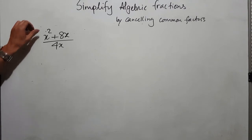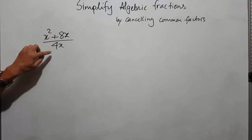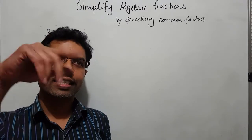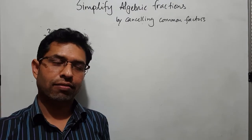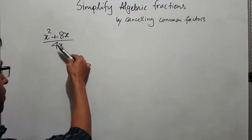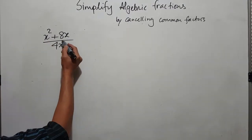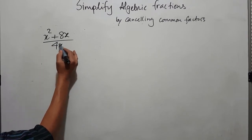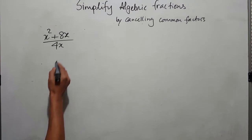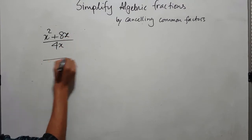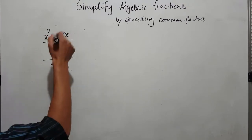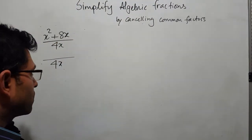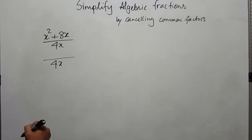Let's start with an example: x squared plus 8x over 4x. When cancelling a common factor, you can only cancel if the terms are in a division relation. Many students make the mistake of cancelling directly, but you have to understand that 4x is shared for both terms in the numerator. Instead of cancelling like that, we need to create the division relation first — only then can we cancel, because cancellation happens between numerator and denominator.